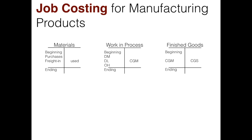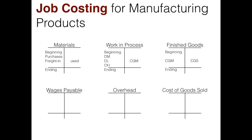Now we're going to add some more T-accounts to this flow of cost: wages payable, an overhead T-account, and a cost of goods sold T-account, to see how all these costs flow from one place to another. Recall that direct materials go directly into work in process, and cost of goods manufactured moves into finished goods. But we don't yet know where direct labor and overhead come from.